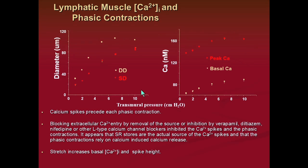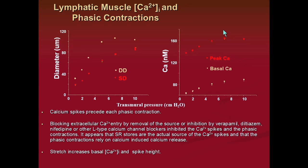As you stretch the vessels by increasing pressure, you stimulate them to contract faster and harder. In part this is due to driving calcium changes. Graphs show pressure changes and corresponding systolic and diastolic diameter measurements along with calcium levels — basal calcium goes up as you stretch it through mechanosensitive channels we don't yet fully know, possibly involving a stretch-sensitive TRP channel. They then release calcium from the SR to generate the peak calcium that drives phasic contractile activity.